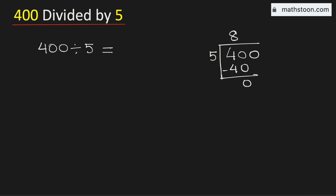Now 0 is less than 5, so we will bring down this number 0. Now this is still 0. As we have brought down the number 0, we need to divide it. 5 times 0 is 0. Subtracting, we get 0.